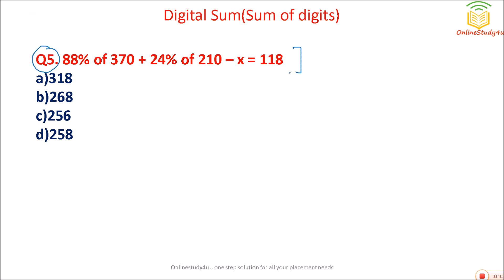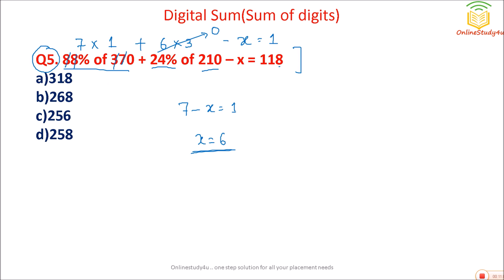Question 5: 88 percent of 370 minus something equals a value. Using digital sum: 8 plus 8 is 16, digital sum is 7. 7 plus 3 is 10, digital sum is 1. Ignore the percentage sign — only calculate for digits. 4 plus 2 is 6, into 3 is 18, digital sum is 9, equals 0. So 7 minus x equals 1, which means x equals 6. Check which option gives digital sum 6: 8 plus 2 is 10, plus 5 is 15 — digital sum is 6. So option D is the correct answer.